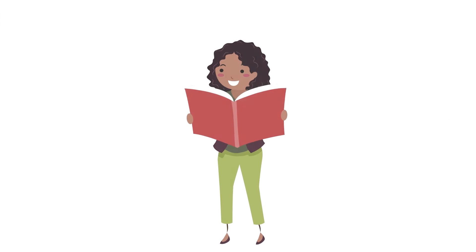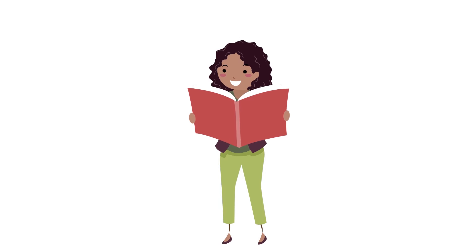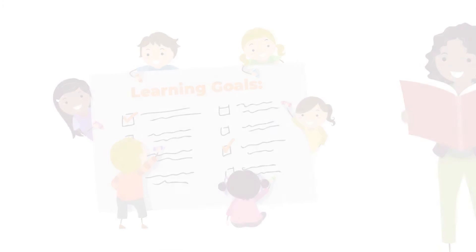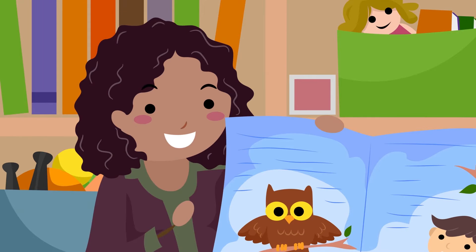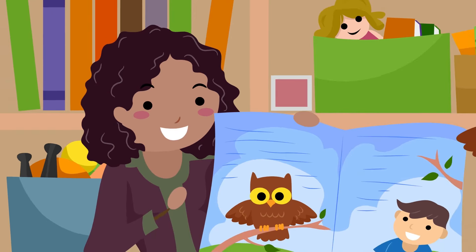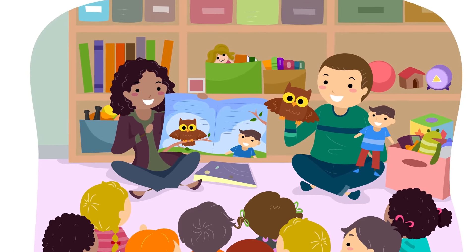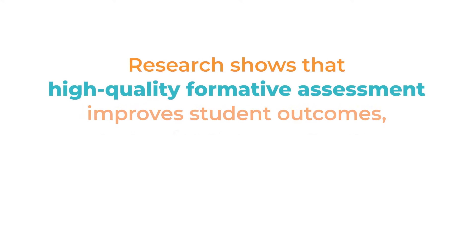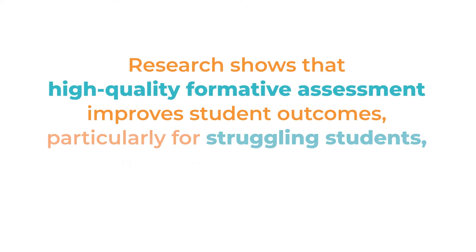Teachers reflect on and analyze the evidence to determine each child's strengths and needs in relation to set learning goals or measures and domains. Teachers then tailor instruction, as appropriate, to target those needs and promote learning. The cycle then starts again.